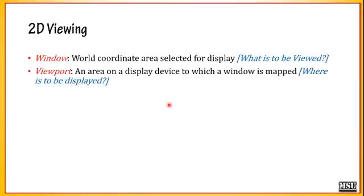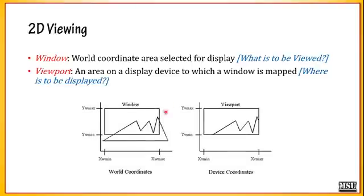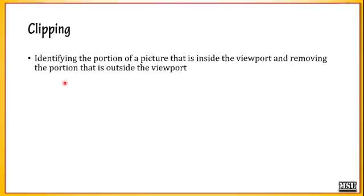In the last video lecture we discussed about Clipping. Clipping is converting from the objects which are all present in the window to a viewport. In 2D viewing, by using window and viewport you can define that window is what is to be viewed and viewport is where it is to be displayed. The original image is here and the remaining portion of this image is not included in the window as well as viewport, so this portion is clipped. The process of clipping the portion which is outside the window is called Clipping — identifying the portion of a picture that is inside the viewport and removing the portion that is outside the viewport.